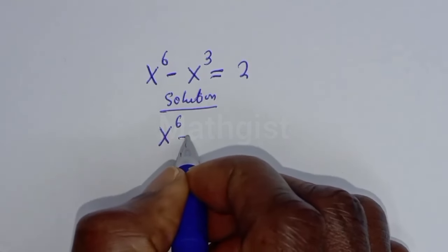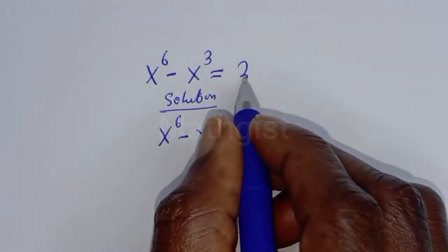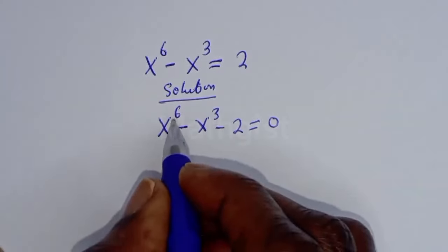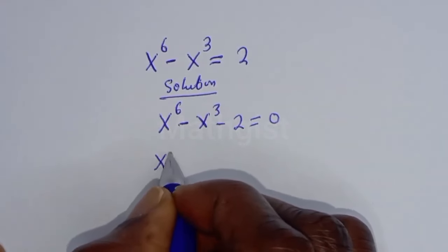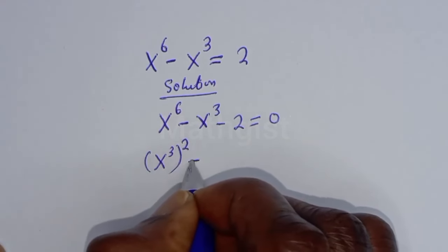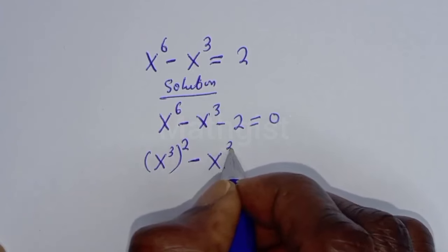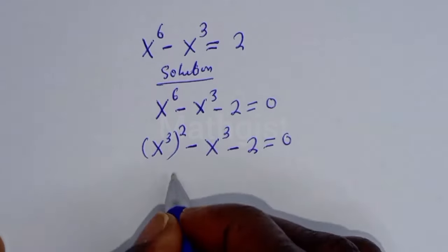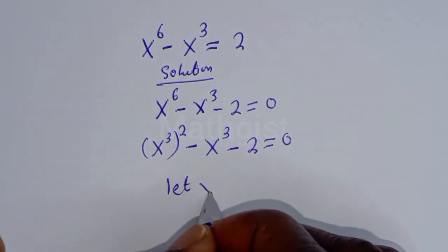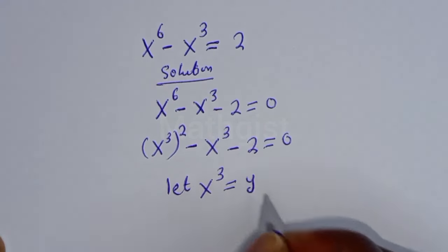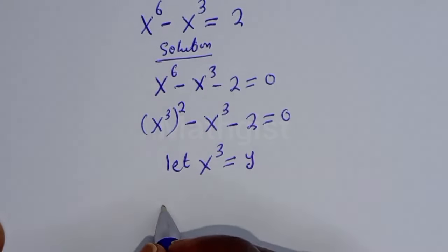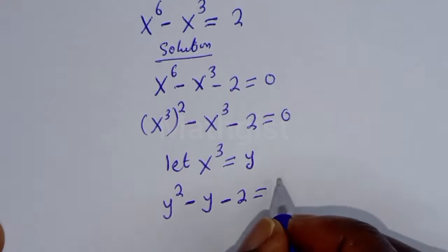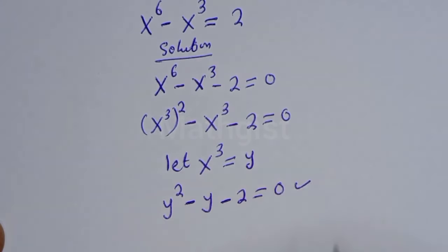We start with s^6 minus s^3. Taking the terms to one side, it becomes s^6 minus s^3 minus 2 is equal to 0. s^6 can be written as (s^3)^2, so this becomes (s^3)^2 minus s^3 minus 2 equals 0. Let s^3 equal y. Then this becomes y^2 minus y minus 2 equals 0, which is a quadratic equation.